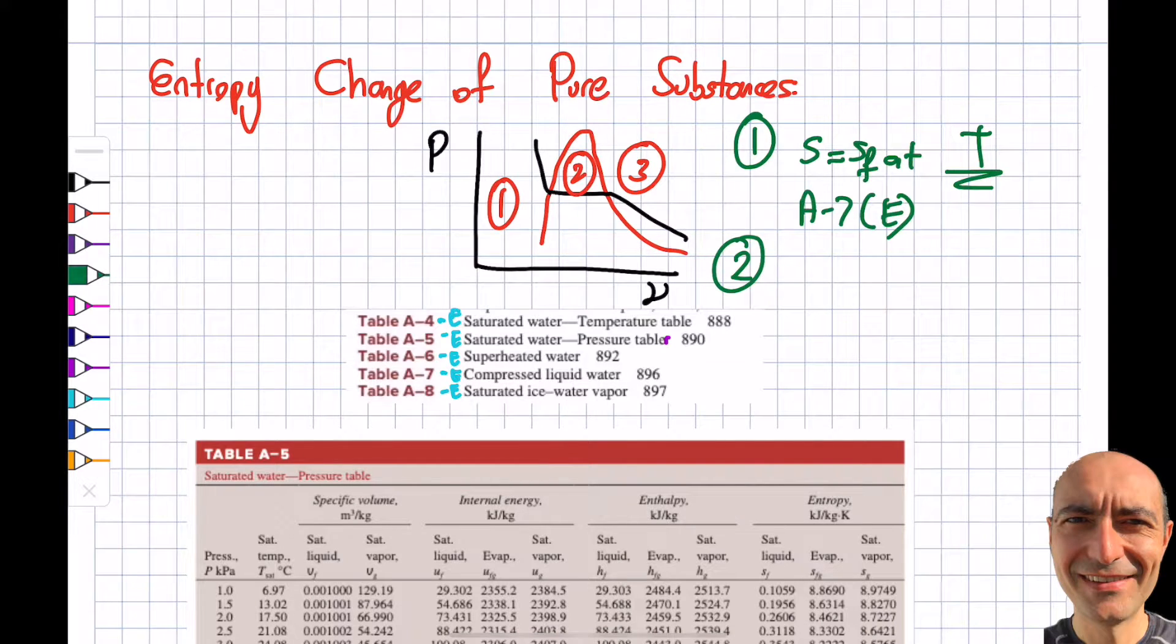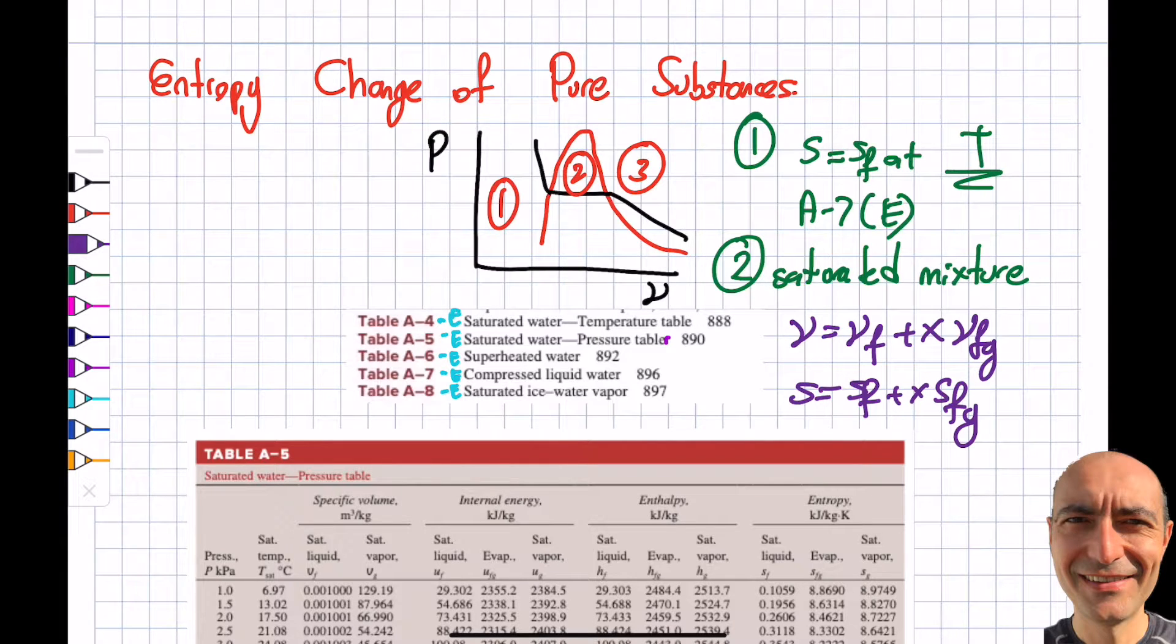If I'm in zone 2, this is the saturated mixture region. I have the quality X. I have A4E or A5E—A4E is for temperature, A5E is for pressure. That's not a big deal. When we did it back then, we said V equals VF plus X times VFG, right? The same thing. S will be SF plus X times SFG for zone 2. In zone 3, I reference A6 or A6E—A6E for British gravitational or A6 for SI. Again, there's nothing new happening here. But I'll solve a question to illustrate how to read the table. It's very similar to how we did it in module 3.